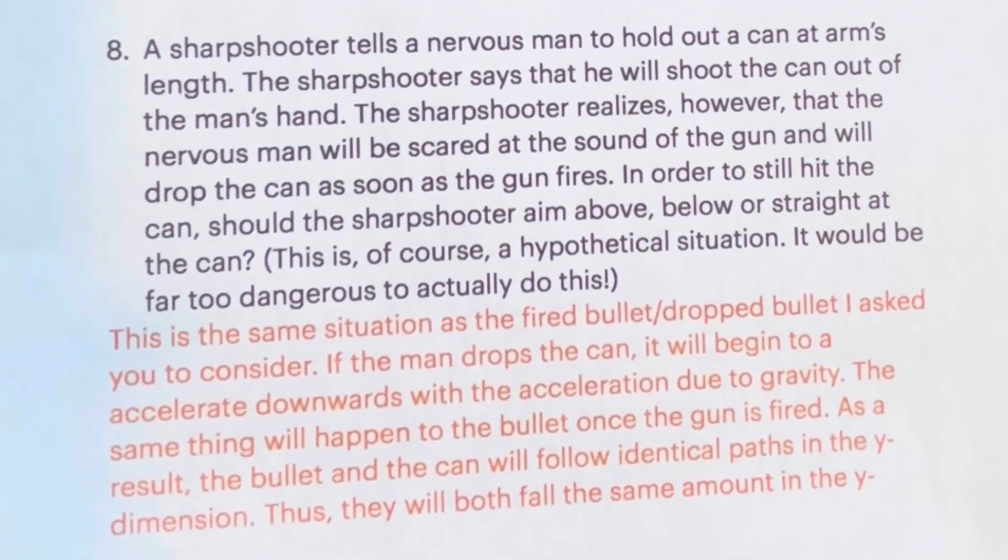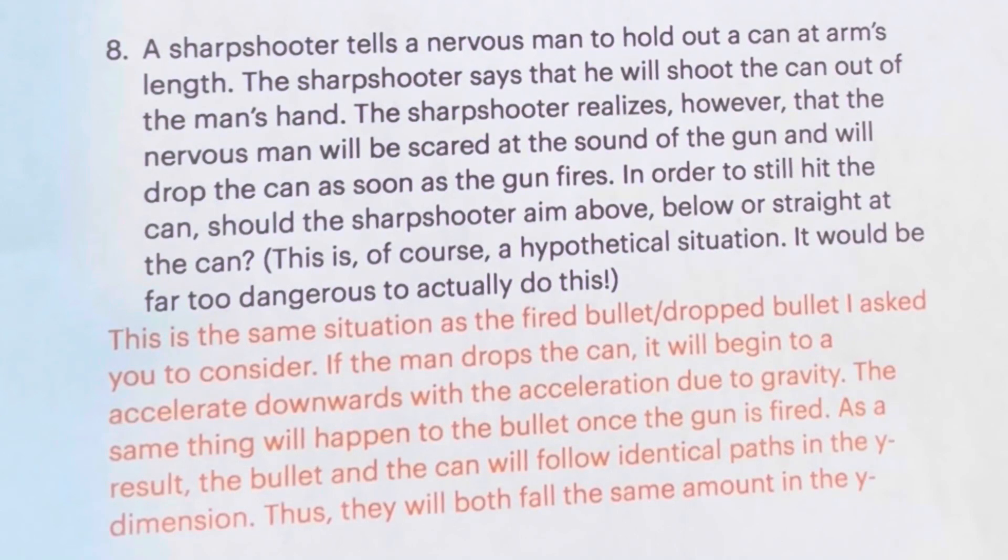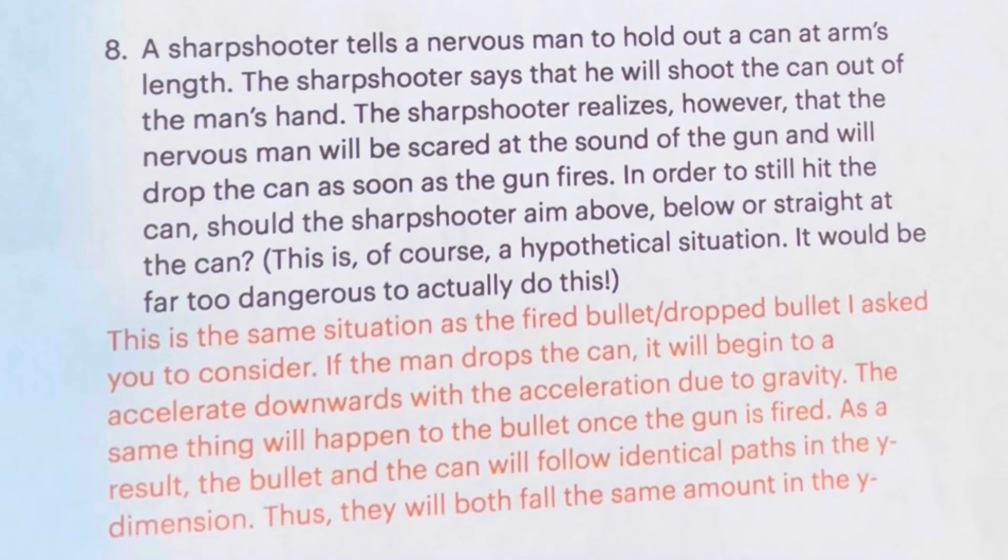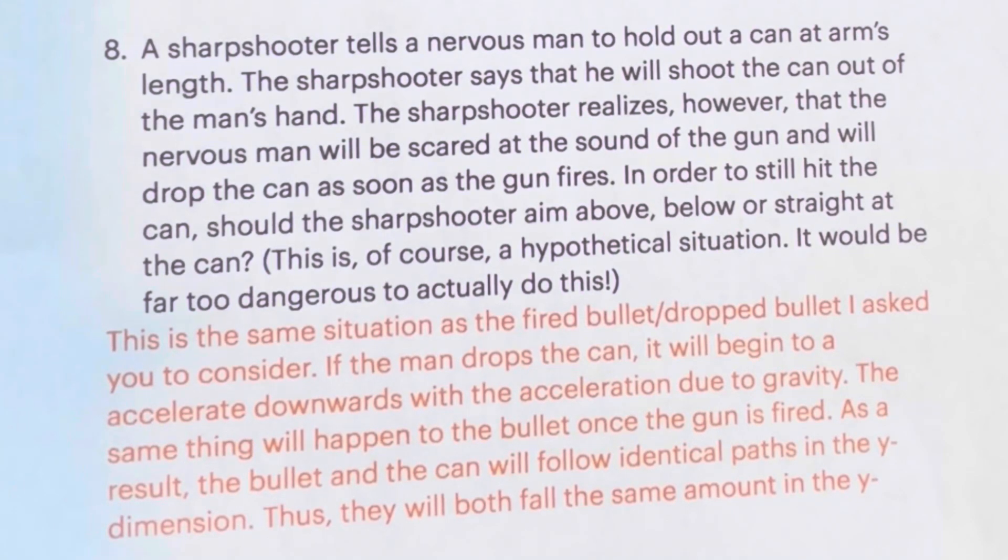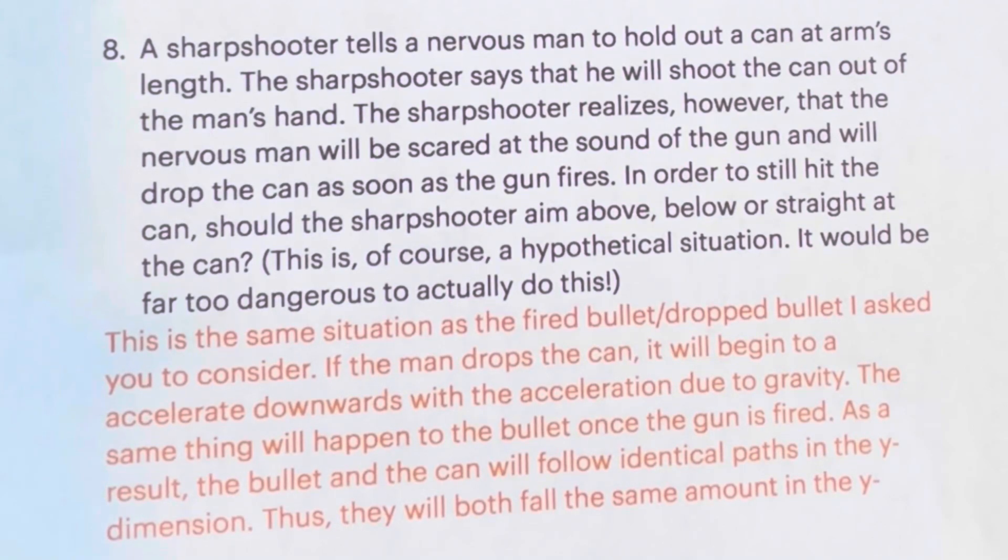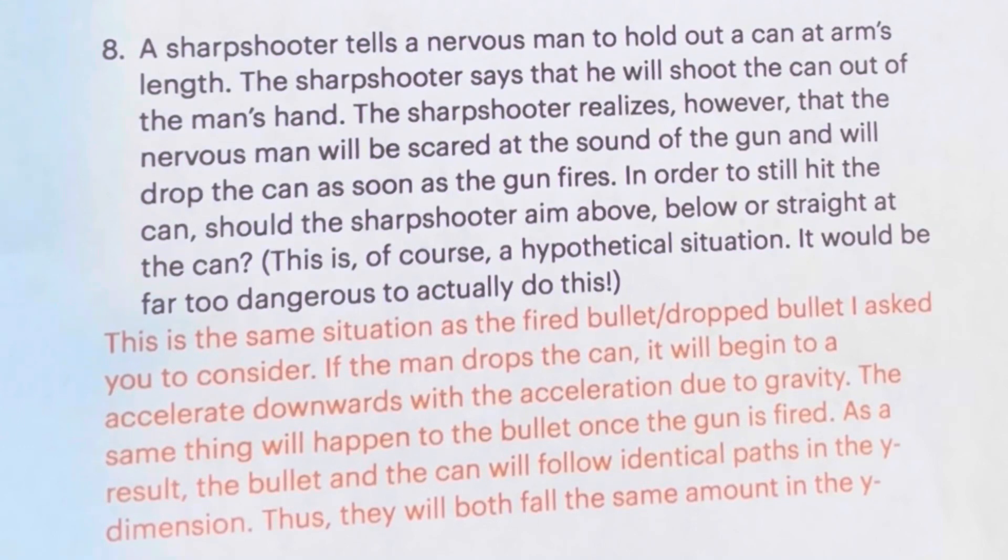A sharpshooter tells a nervous man to hold out a can at arm's length. The sharpshooter says that he will shoot the can out of the man's hand. The sharpshooter realizes, however, that the nervous man will be scared at the sound of the gun and will drop the can as soon as the gun fires. In order to still hit the can, should the sharpshooter aim above, below, or straight at the can? This is, of course, a hypothetical situation. It would be far too dangerous to actually do this. This is the same situation as the fired bullet, dropped bullet that I asked you to consider.